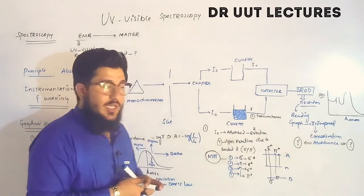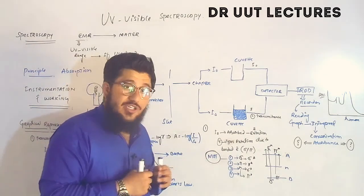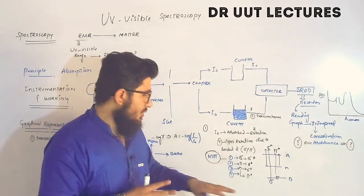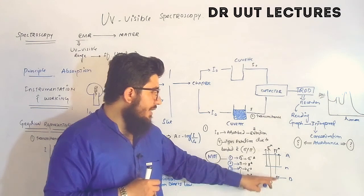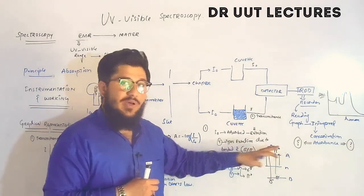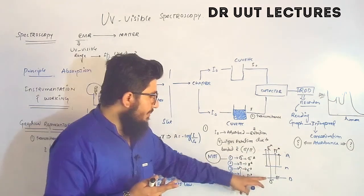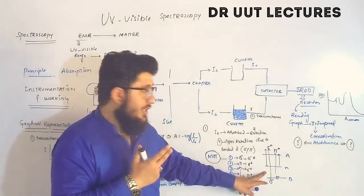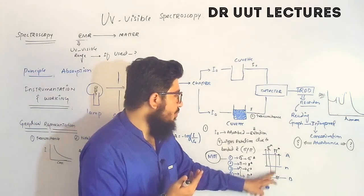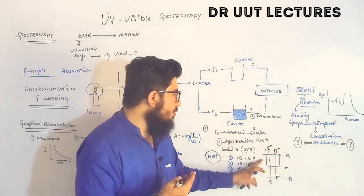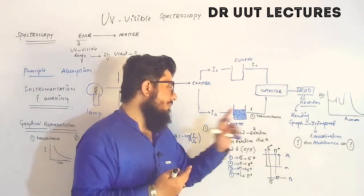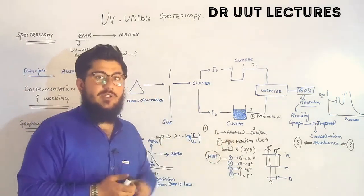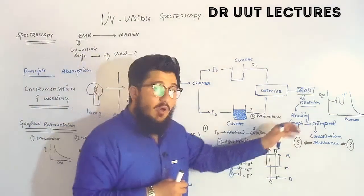So we have four types of transitions: sigma to sigma star, pi to pi star, n to sigma star, and n to pi star. A common question is: which transition requires the highest energy? You can determine this from the distances between orbitals. Sigma to sigma star has the largest distance and therefore requires the most energy, followed by pi to pi star, then n to sigma star, and finally n to pi star.